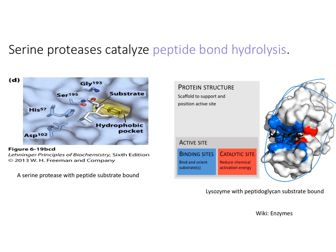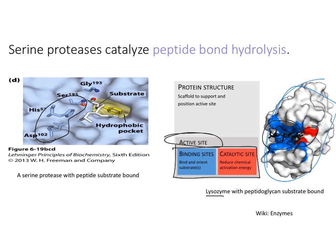The term active site includes both a binding site and a catalytic site. For this lysozyme enzyme, the catalytic residues are here and the binding residues are here. For the serine proteases, they also have distinct catalytic and binding sites within the active site. The catalytic residues are here, and the yellow pocket — the hydrophobic pocket — is where the binding residues are.